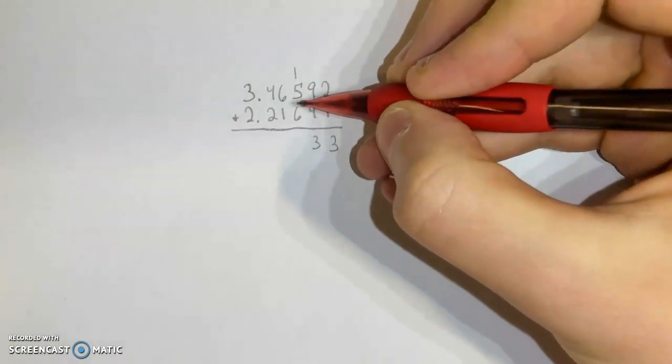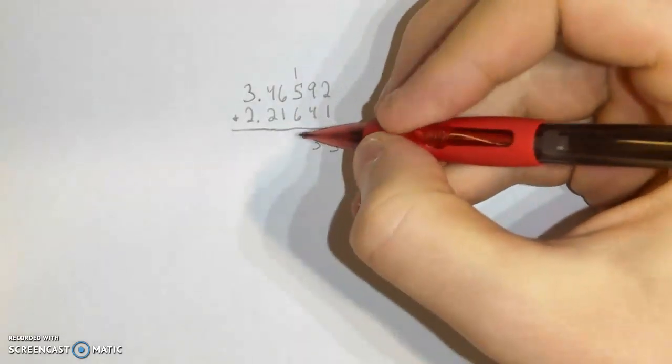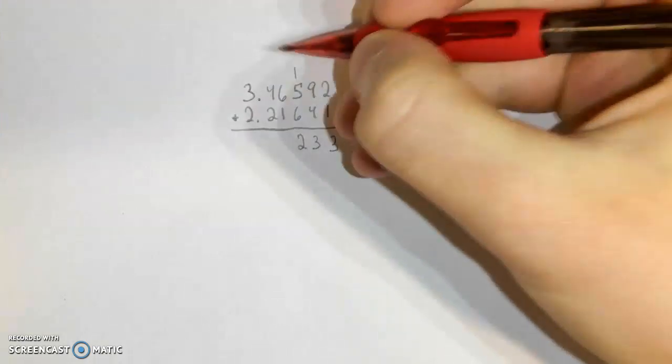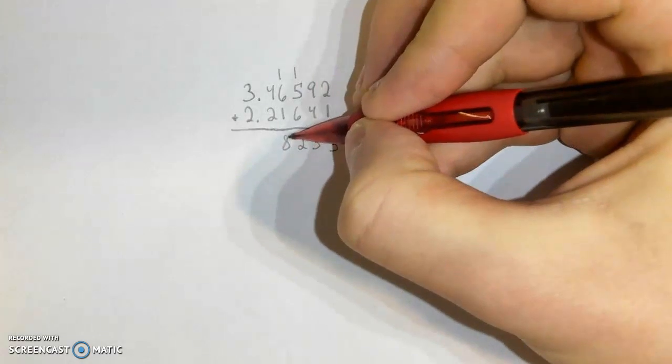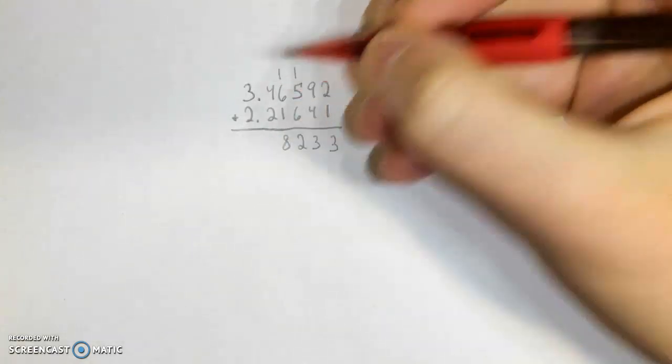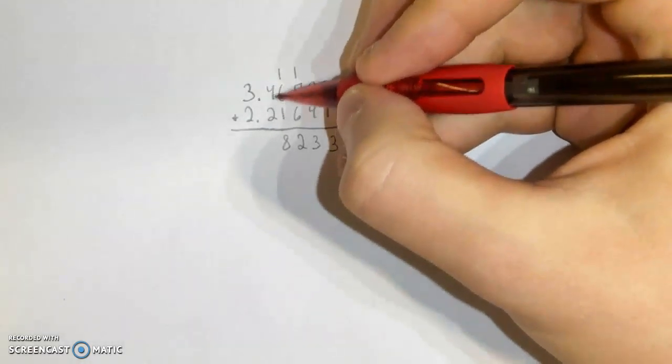So 1 plus 5 plus 6. So that's going to be 12. Carry that 1 up again. 1 plus 6 plus 1. 8. And you don't have to carry that 1 there. So now it's just straight up.